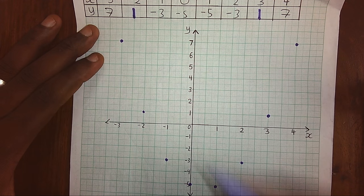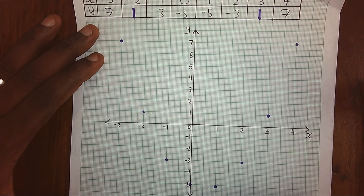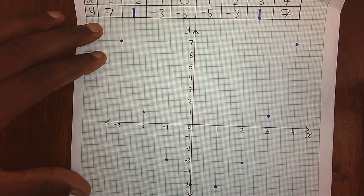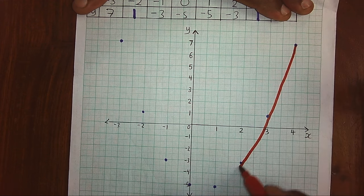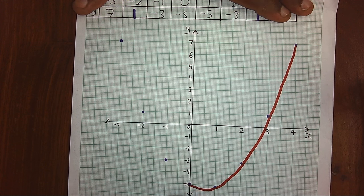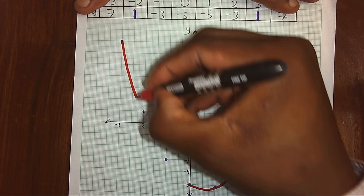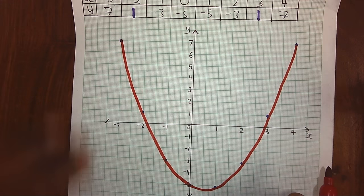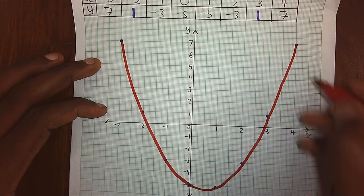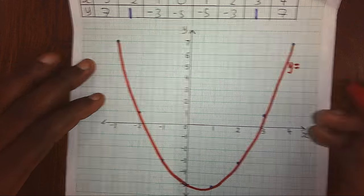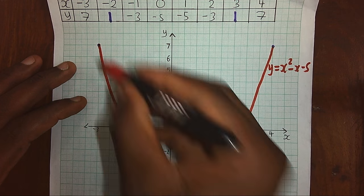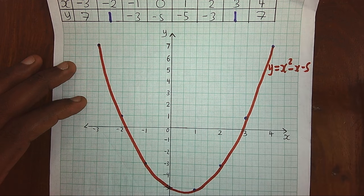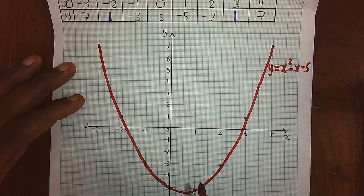After plotting all the points, you get your smooth curve and join the points. Now we have our curve. We shall name it y equals x squared minus x minus 5. This is our parabola as we can see it. This is how we quickly draw a graph. Let's have another example.